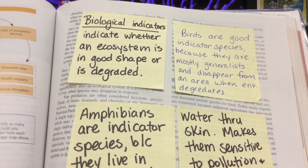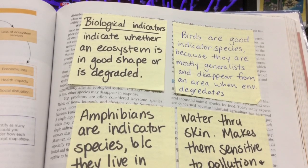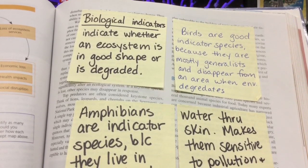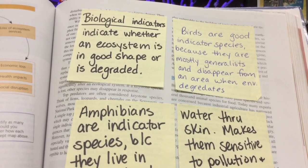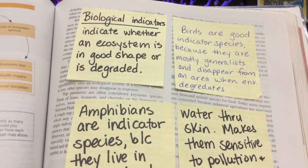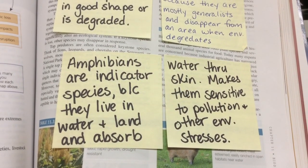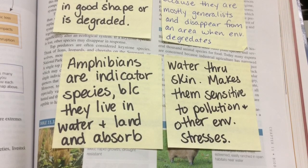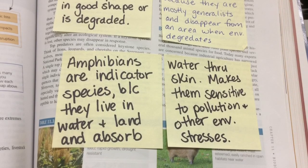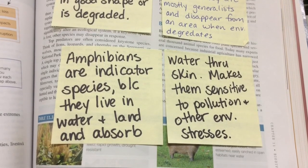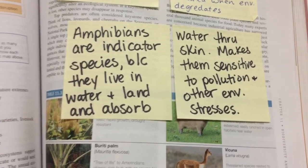Let's talk about biological indicators. These are important because they tell us the health of an ecosystem or if something is about to cause ecosystem decline. Birds are really good indicators because most are generalists — they can eat almost anything and live anywhere — so when they start to disappear, you know there's a problem. Amphibians are another indicator because they live on land and in water and absorb toxins through their skin, making them indicators of pollution, heat, light, deforestation, global warming, drought, or toxins in the air and water.